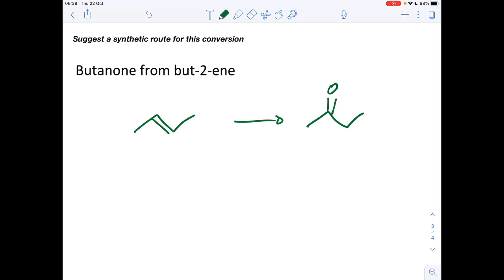Okay, so just as before, we can't do this in one step. So we're going to have to go via an intermediate. And the intermediate in this case is going to be butan-2-ol. And then we can convert the butan-2-ol into the butanone.